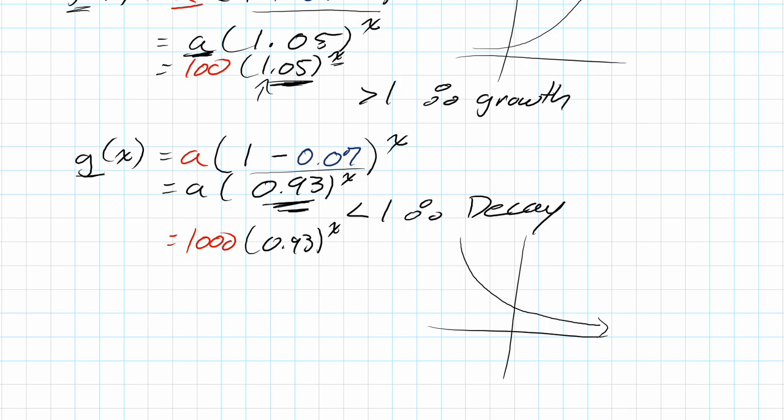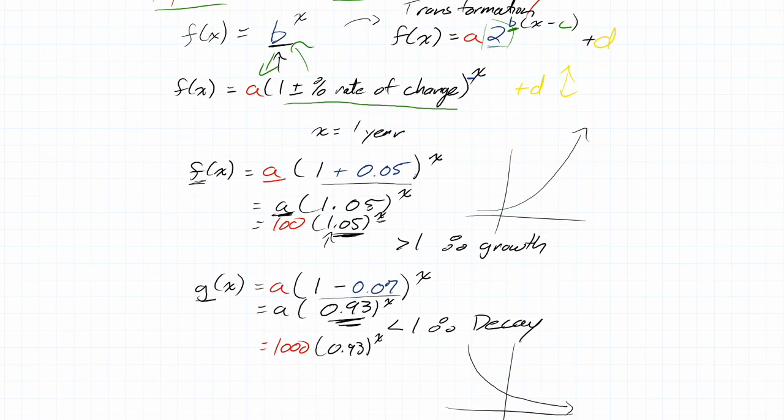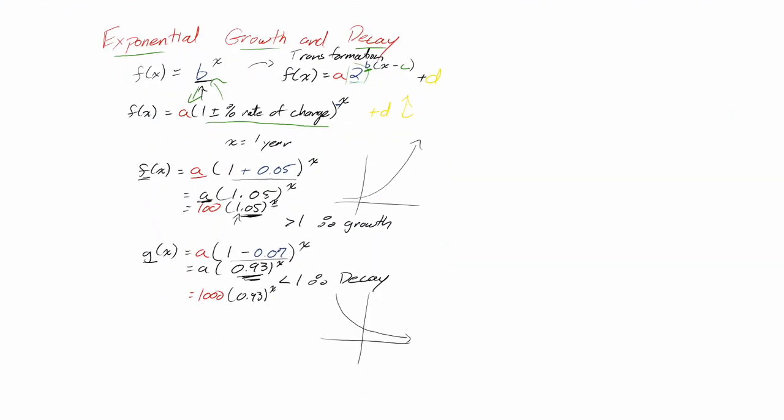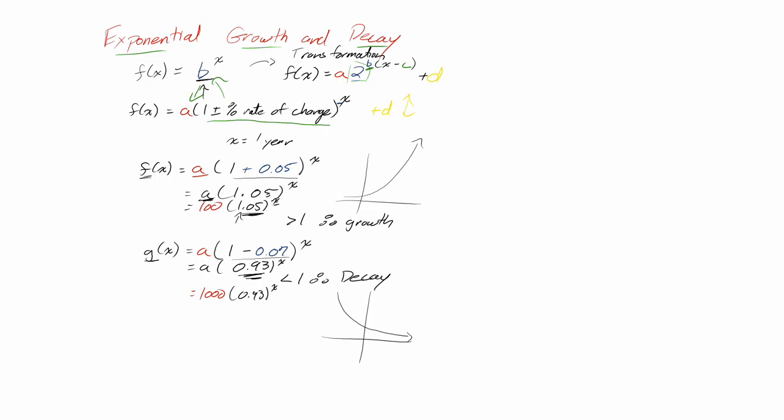That's the general way of setting up growth and decay for an exponential function. The rest of that stuff, transformations can all be part of it, but this is the most basic way of setting something like that up.